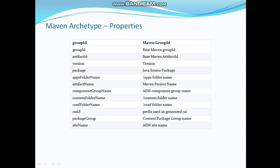To recap: the groupId is the basic Maven group identifier, the artifactId is the name of your project, and the package is your Java source package where you keep your Java files, servlets, or any other Java-related files. These are the properties used to create your AEM archetype.